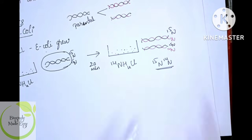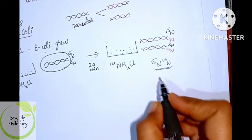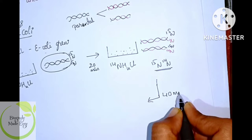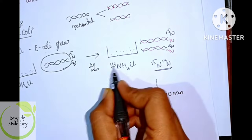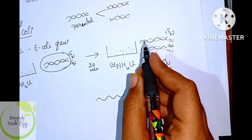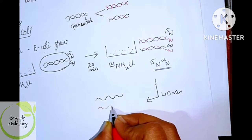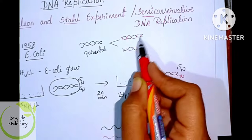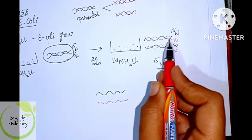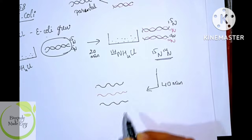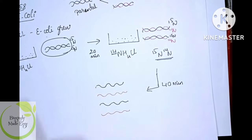After a second generation — 40 minutes total in N14 medium — the strands separate again. Each N15-N14 hybrid separates, and new N14 strands are synthesized alongside each. The result is: one hybrid N15-N14 DNA and one fully light N14-N14 DNA. The parental DNA strands separate and new strands form on each side.